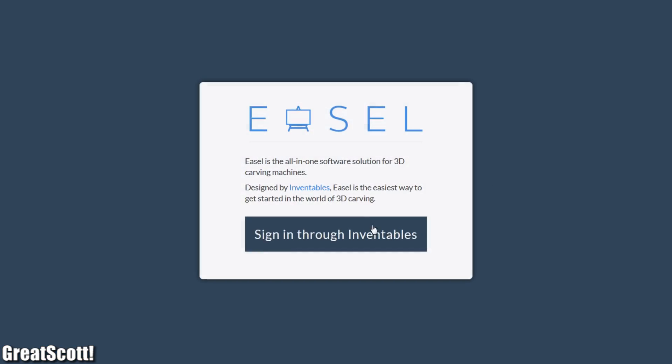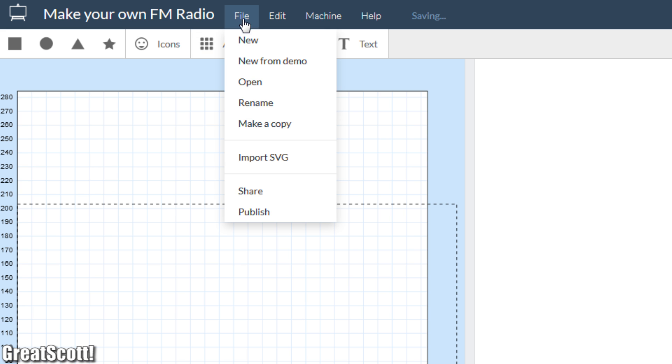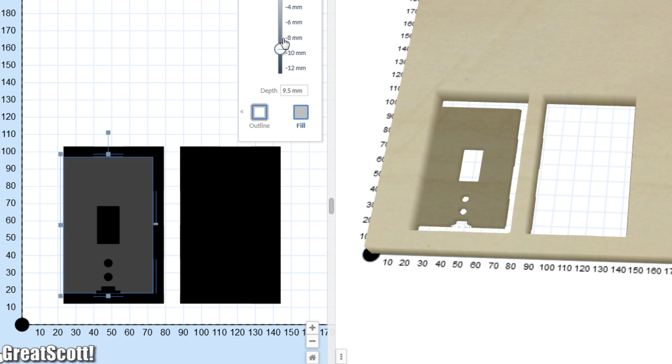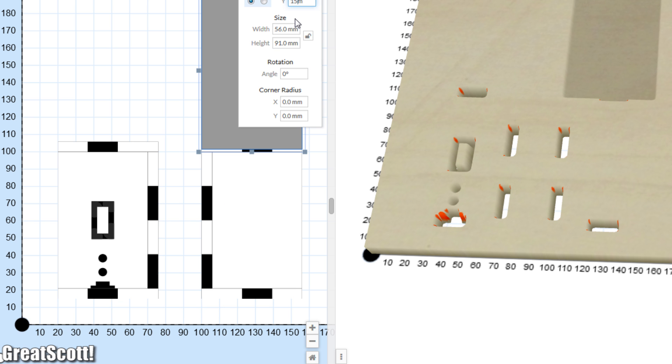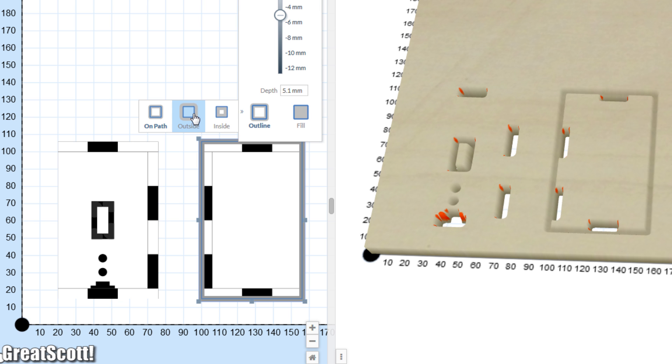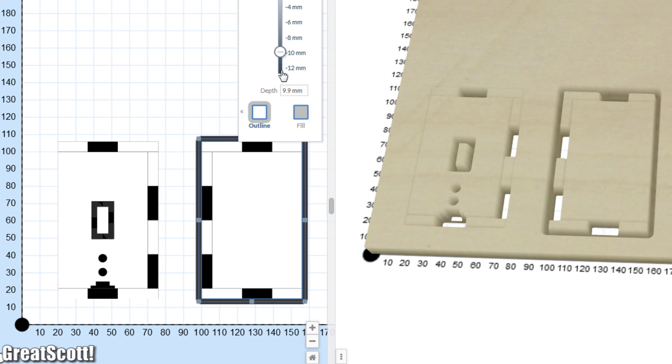As for me I started the easel X-Carve control software, imported the SVG files, did some adjustments, which portions needed to be removed and which not and finally added a square around each piece in order to separate it from the wooden panel.